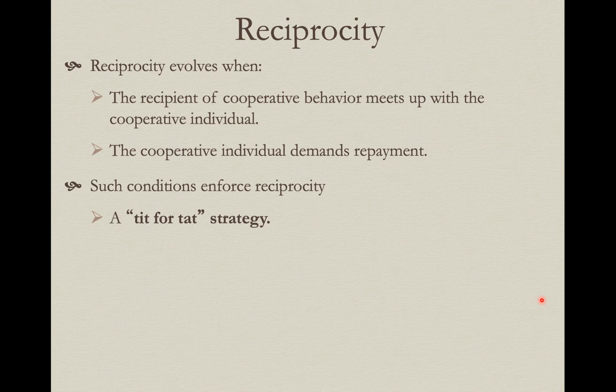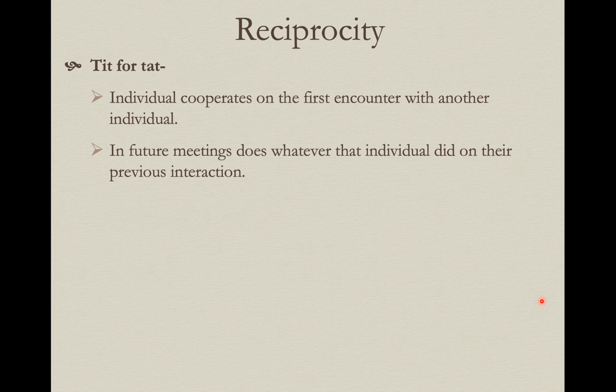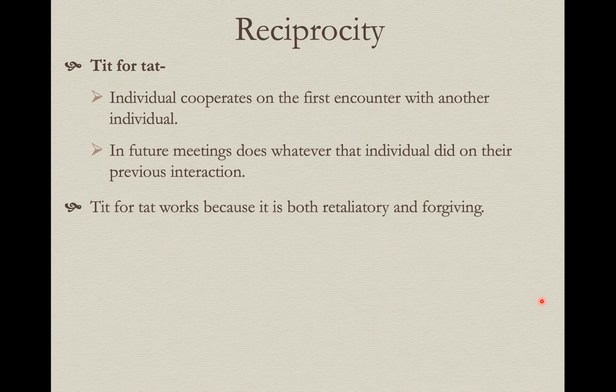Tit for tat is a way to counter the prisoner's dilemma. If an individual cooperates on their first encounter with another individual and serves as the altruist, then when they meet in the future, each individual does whatever was done to them in the previous interaction. That's what it means — tit for tat — such that it's both retaliatory and forgiving.